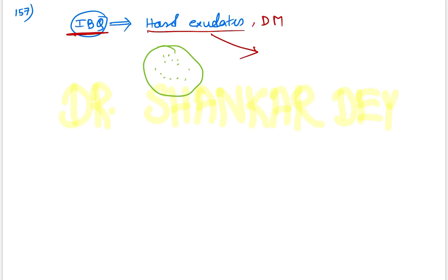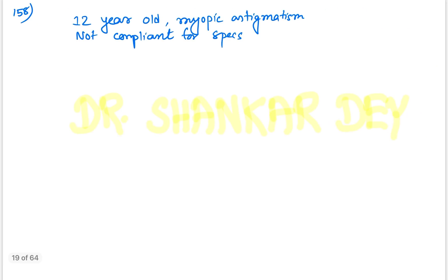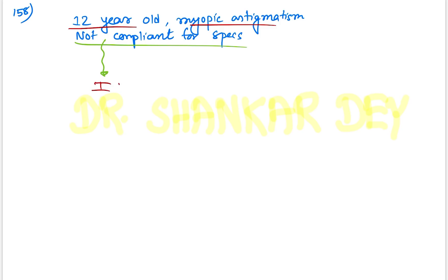Question 158: A 12-year-old with myopic astigmatism, non-compliant for spectacles — what is the alternative management? According to national level faculty, the answer is ICL (implantable collamer lens / intracapsular lens).